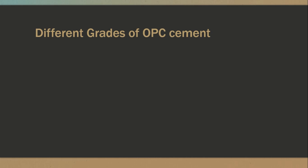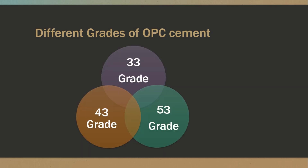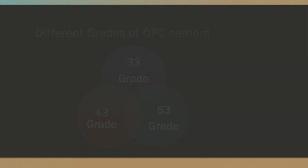Different grades of OPC cement — OPC means Ordinary Portland Cement. Ordinary Portland Cement can be classified into three grades: 33 grade, 43 grade, and 53 grade. Ordinary Portland Cement is graded according to its strength. The grade indicates the compressive strength the cement will attain in 28 days of setting.